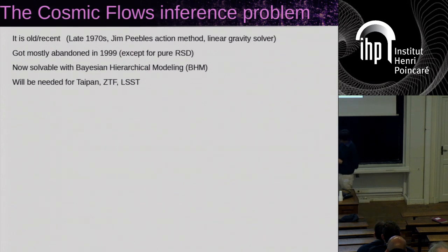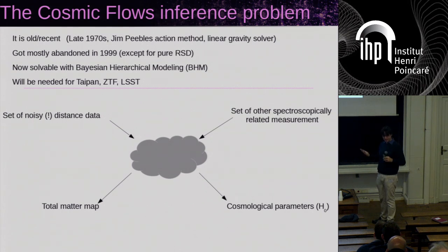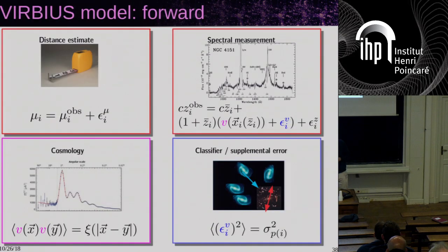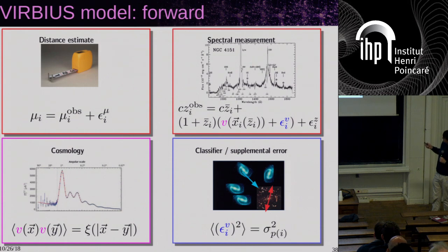Of course it's not a new idea — it dates from at least the 1970s, with people working on the action method. The problem is the following: you have a set of noisy distance data and spectroscopic data at the same time, and you'd like to mix them together and get a total matter map plus cosmological parameters simultaneously. The first model that came up was the Virbius model, which tried to encode all the problems we know occur in data. We rely on a distance estimate that is mostly log-normal, with spectral measurements with velocity field that have uncertain characterization on both the model side and the data side. We have cosmology entering the problem. Because we are uncertain about the model, depending on the types of galaxies we may be missing nonlinear parts of the flows — we have to distinguish between galaxies in the field like spiral galaxies, and red galaxies living in the central part of clusters, which may have larger velocity dispersion.